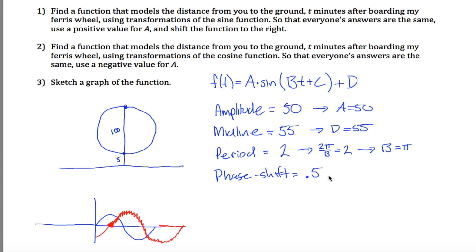And now you're trying to figure out the phase shift. Well, you know that negative C divided by B, which is equal to pi, is equal to the phase shift, which is 0.5, but I'll write it as 1 half. And I can solve this for C if I multiply both sides by pi, and then by the negative, I get that C is equal to negative pi over 2.